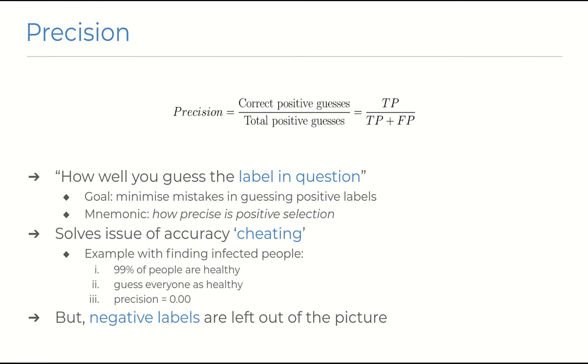And this is where a metric like precision comes into play. We can say that precision is a measure of how well you've guessed the label that we're interested in, namely the positive case. And we calculate it by dividing the number of correct positive guesses by all the positive guesses we've made. Formally, the true positive count over the true positive plus false positive count. The goal of a system that optimizes for this metric would be to make as few mistakes as possible when guessing the positive labels.